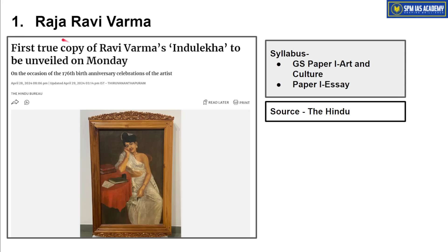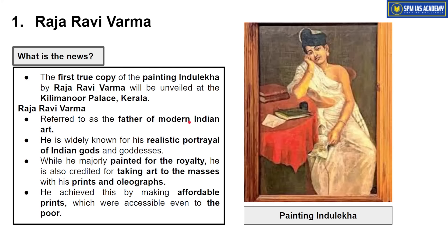The first article is about Raja Ravi Verma. This topic is important from GS Paper 1 Art and Culture point of view. The first copy of the painting 'Indu Lekha' by Raja Ravi Verma has been unveiled at Kilimanour Palace, Kerala. You should know that the painting Indu Lekha was created by Raja Ravi Verma.